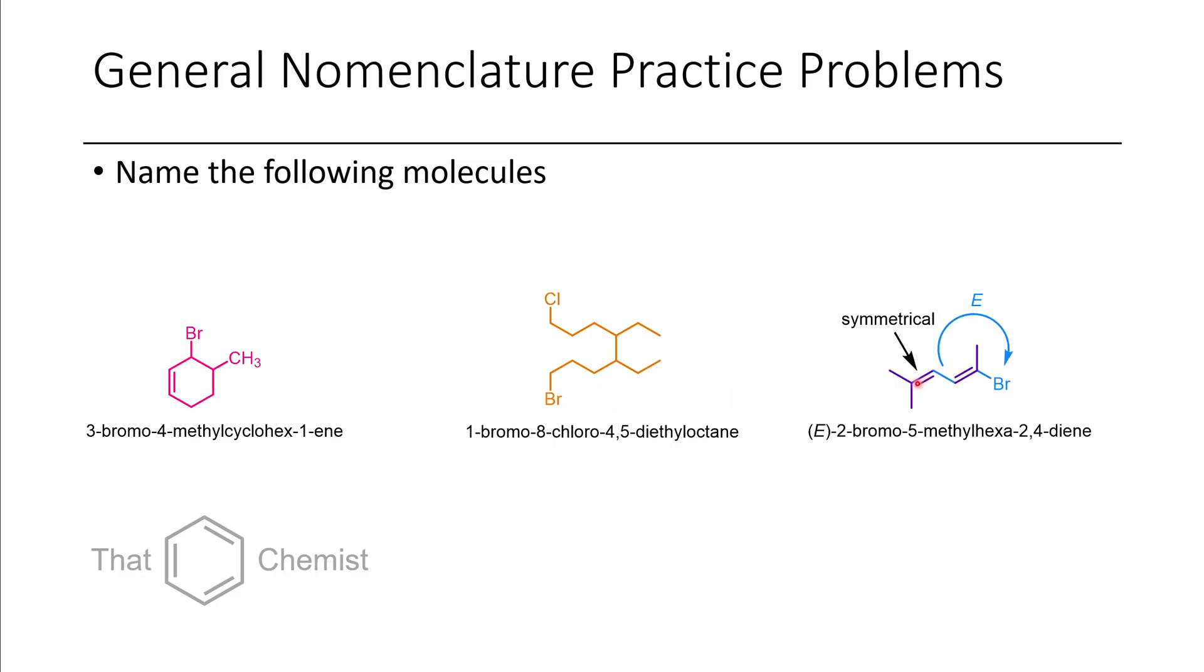In this example, we have what's called a diene, which is where we have two alkenes in the same molecule. This alkene here is symmetrical, so it isn't given an E or Z nomenclature. When it comes to this alkene, because the bromine is the priority substituent on this carbon of the olefin, and there's only one carbon on the other side, they're opposite from each other, which is entgegen, so they're given the E nomenclature for this alkene.